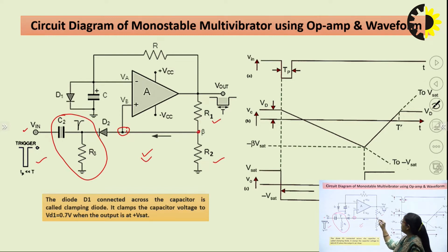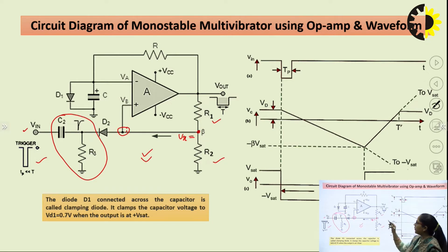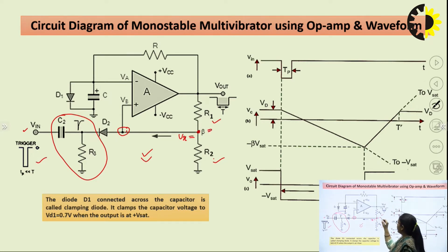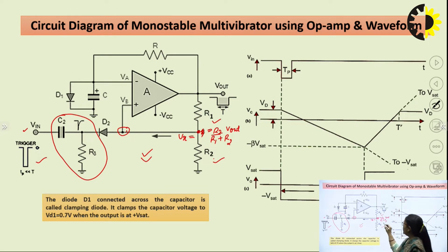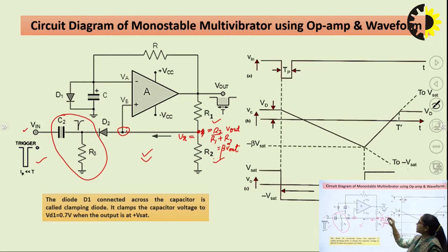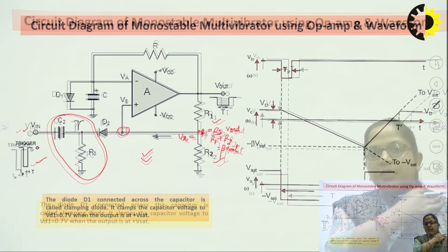The voltage at the non-inverting terminal is Vx. Since Vout can be either +Vsat or −Vsat, Vx = β·Vout, where β = R2/(R1+R2). So Vx will specifically be +β·Vsat or −β·Vsat depending on whether the output is in positive or negative saturation.